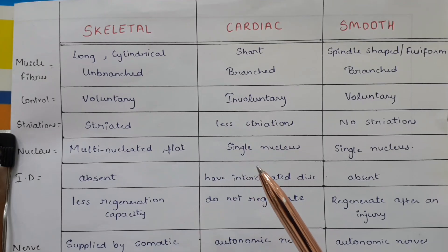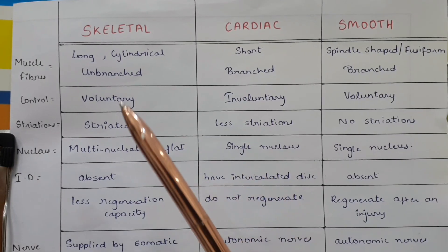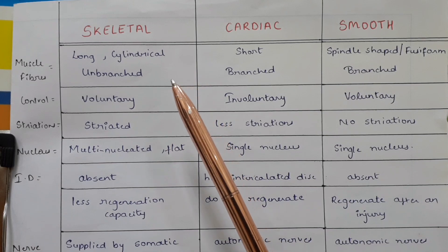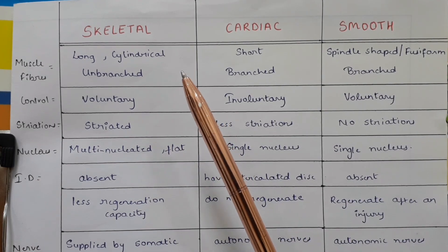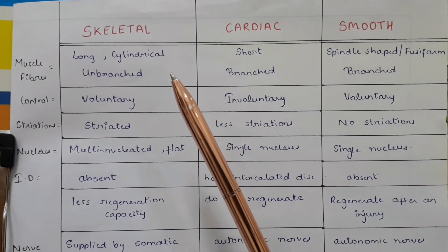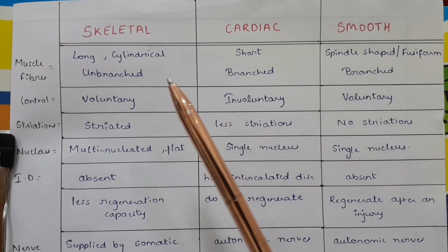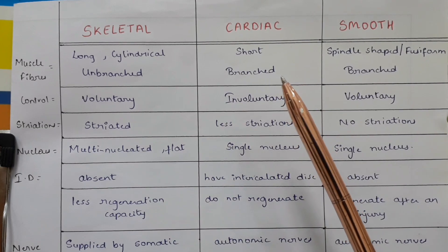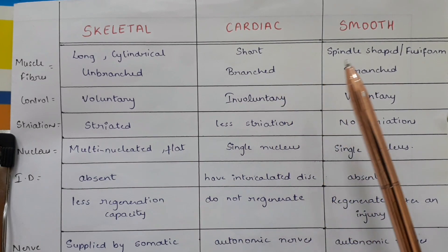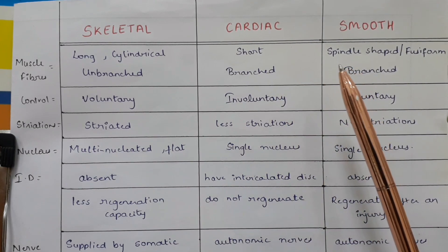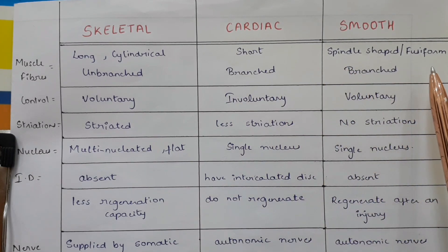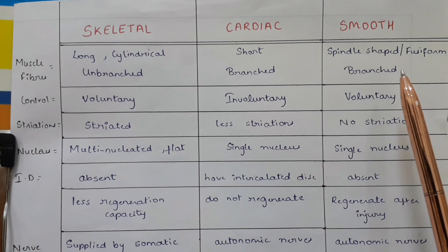Summary of skeletal, cardiac, and smooth muscles: Muscle fibers in skeletal muscle are long, cylindrical, and unbranched. In cardiac muscle they are short and branched. In smooth muscle they are spindle-shaped or fusiform and branched.